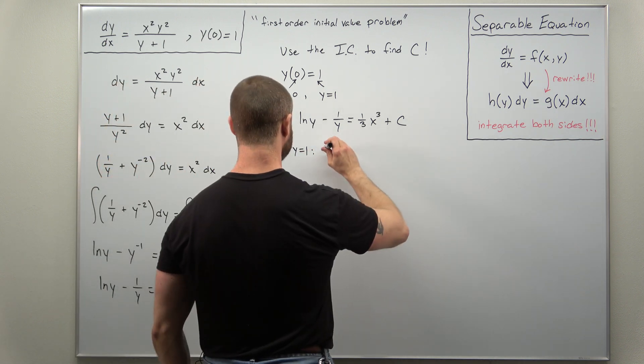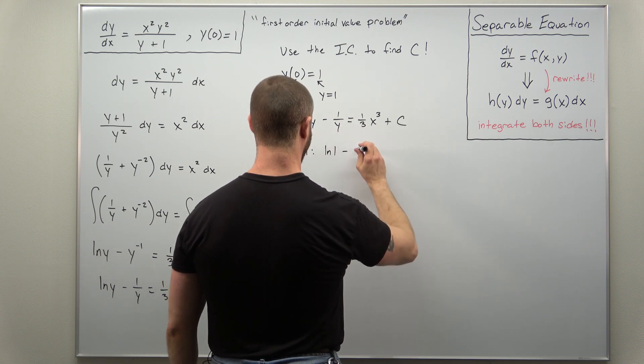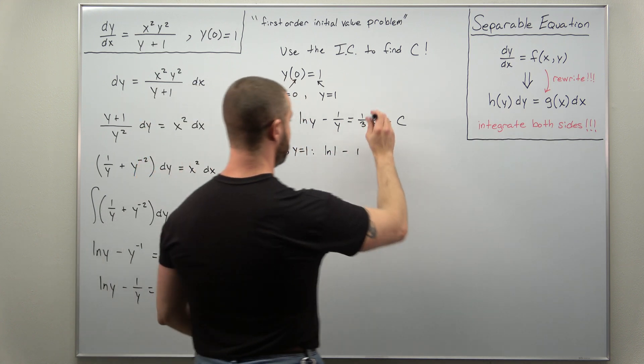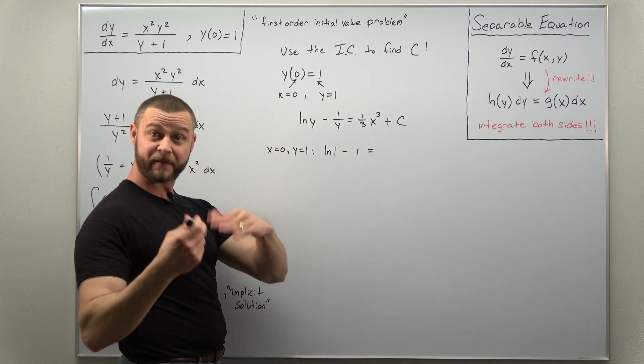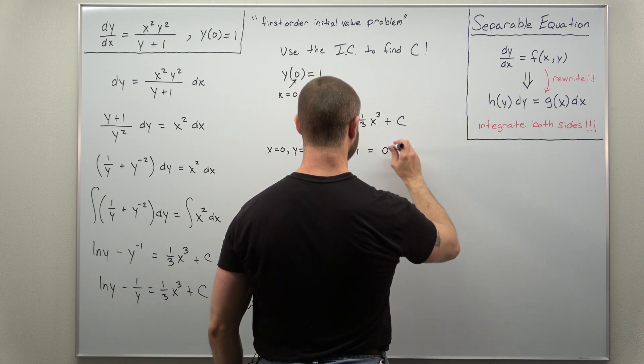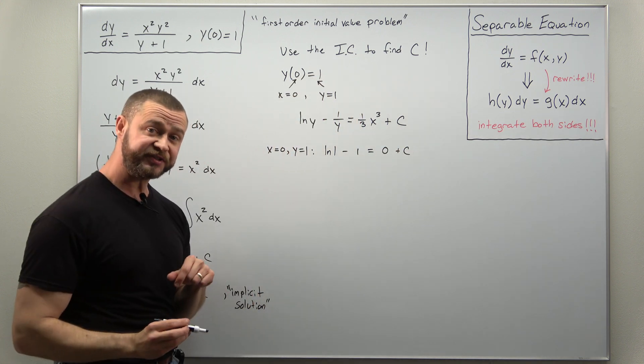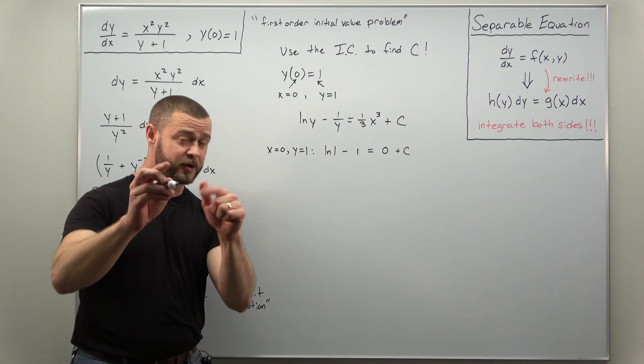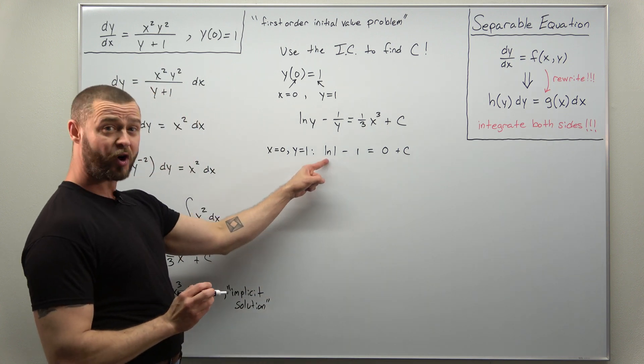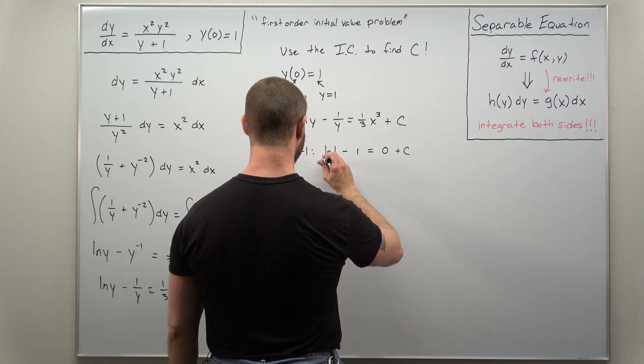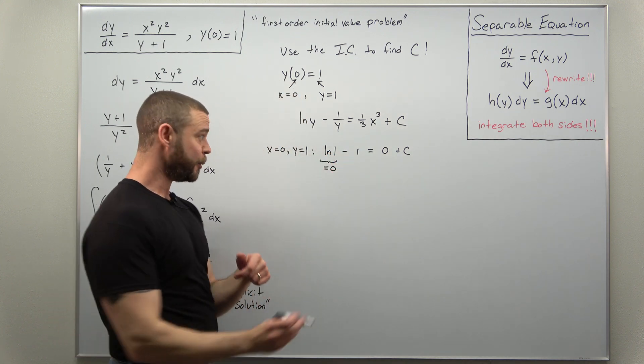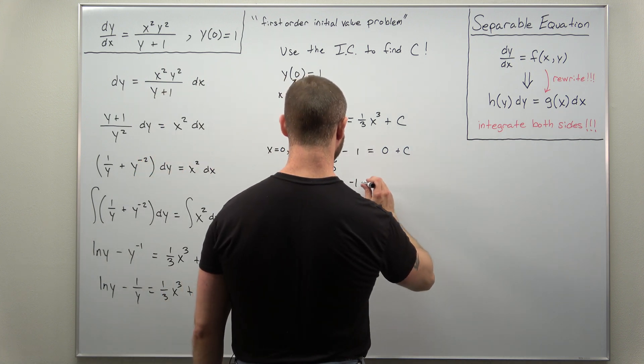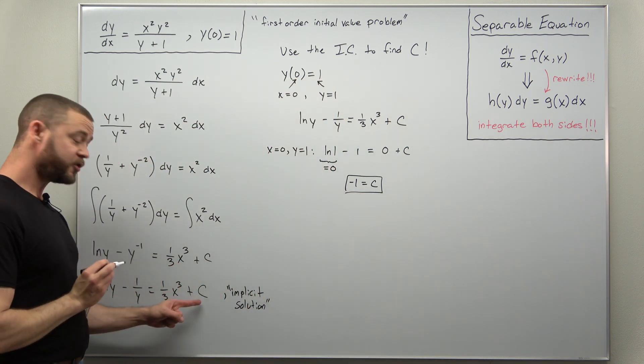All right. If we go ahead and write that out, we're going to get natural log of one minus one over one, which is one. And then on the right side, plugging in x is zero, x cubed, when x is zero, that just becomes zero. So we get on the right side, zero plus c. And hopefully from your knowledge from previous calculus courses, you recall the value for natural log of one that's zero. So what we get here is very simply negative one equals c. And that is our value for the integration constant.